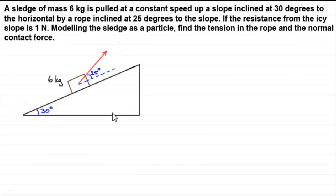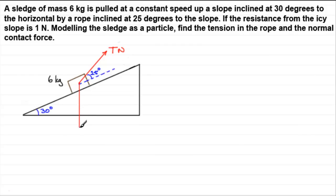I've got a sketch of the diagram here to give you some idea, but we need to add to it. Here's our rope pulling our sledge of mass six kilograms up the slope. The rope is inclined at 25 degrees to the slope and the slope is inclined at 30 degrees. We'll use T for tension — T Newtons. We've also got the weight of the object acting downwards, which is mg. The mass is six kilograms so that's 6g, and I'll use g = 9.8 m/s².